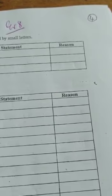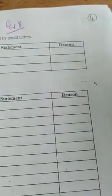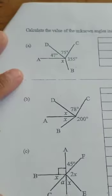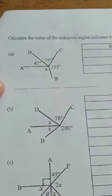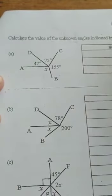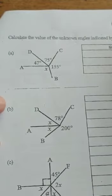Okay, good afternoon. So today we're looking at page 4 of the geometry workbook. The question is, calculate the value of the unknown angles indicated by the small letters.